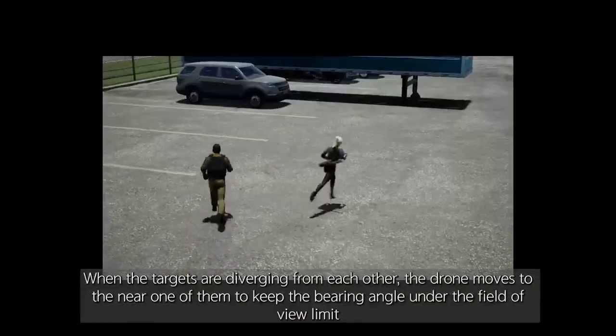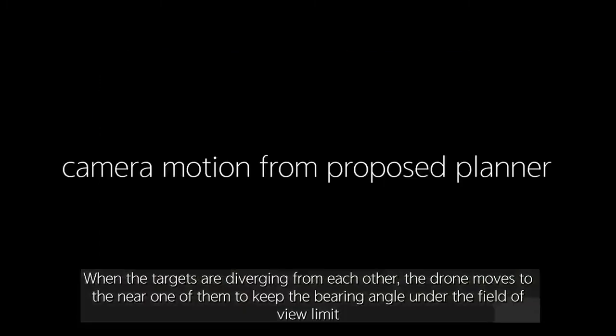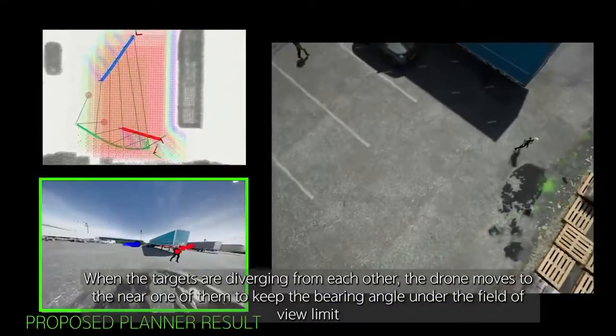When the targets are diverging from each other, the drone moves to the nearer one of them to keep the bearing angle under the field-of-view limit.